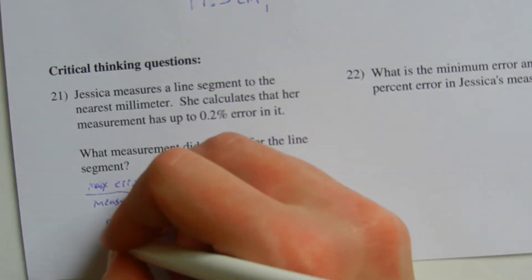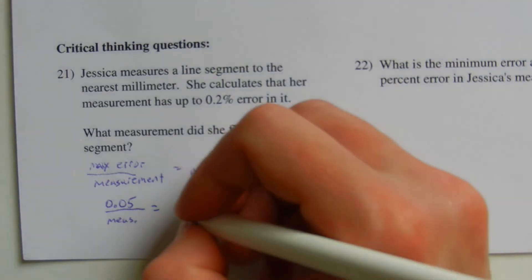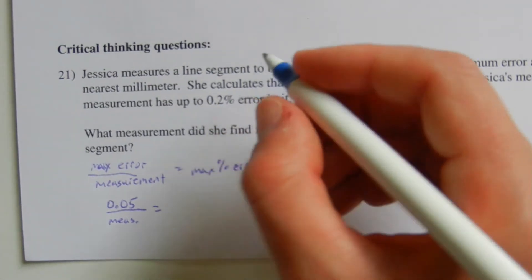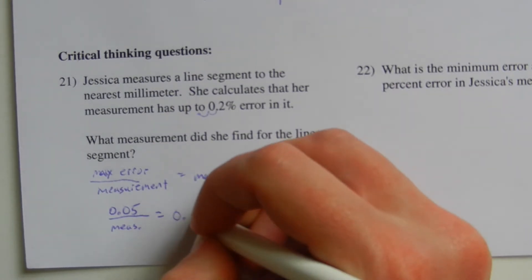We're dividing that by our unknown measurement. And that's going to equal our max error of 0.2%, which, converting that to a decimal, is 0.002.